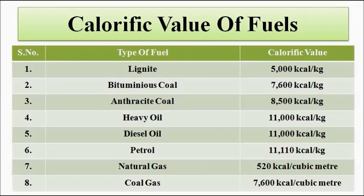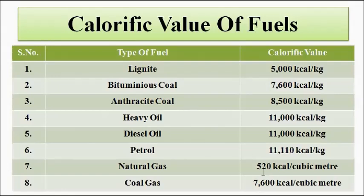For liquid fuels: heavy oil has a calorific value of about 11,000 kilocalories per kg; diesel oil is also around 11,000 kilocalories per kg; and petrol is approximately 11,100 kilocalories per kg. These are average values — actual values may vary slightly. For gaseous fuels, natural gas has a calorific value of about 9,000–9,500 kilocalories per cubic meter, and coal gas has about 4,700 kilocalories per cubic meter. On complete combustion of a unit quantity of these fuels, this much heat energy will be generated.